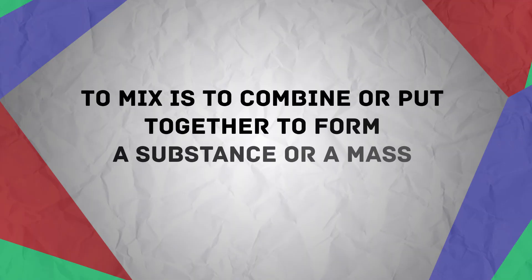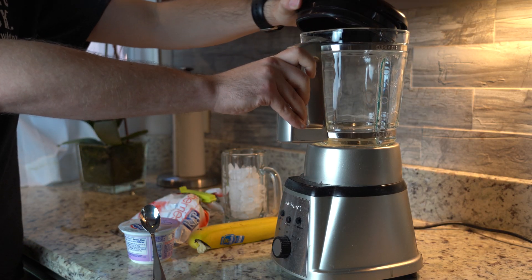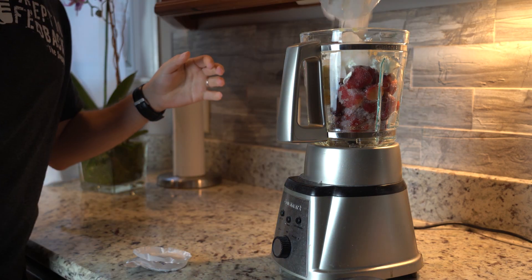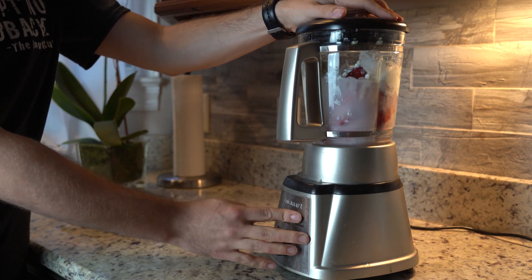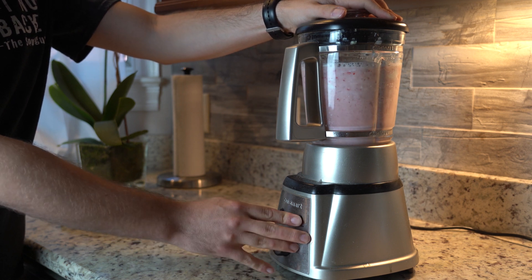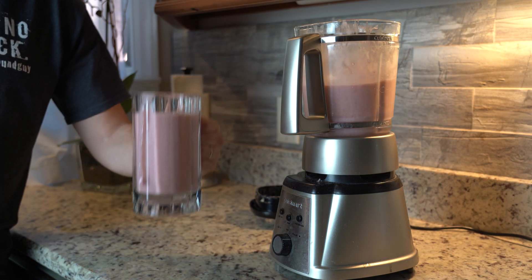Mixers, like their name suggests, mix. To mix is to combine or put together to form a substance or a mass. Think of making a smoothie in an actual mixer you would find in your kitchen — you take a bunch of ingredients, put them together, and press the button. The result? Many different separate entities blended together to form one, hopefully, great-tasting beverage. Cheers!